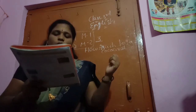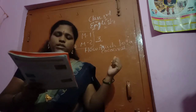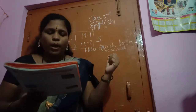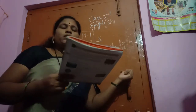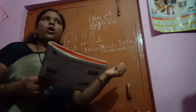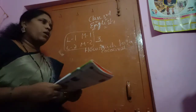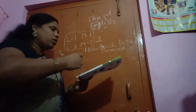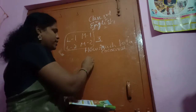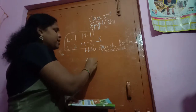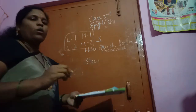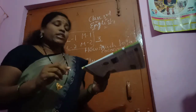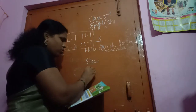Our letters OW sound like the OW in 'show' — it sounds like 'O'. Now we are reading: S-L-O-W — Slow. Slow.